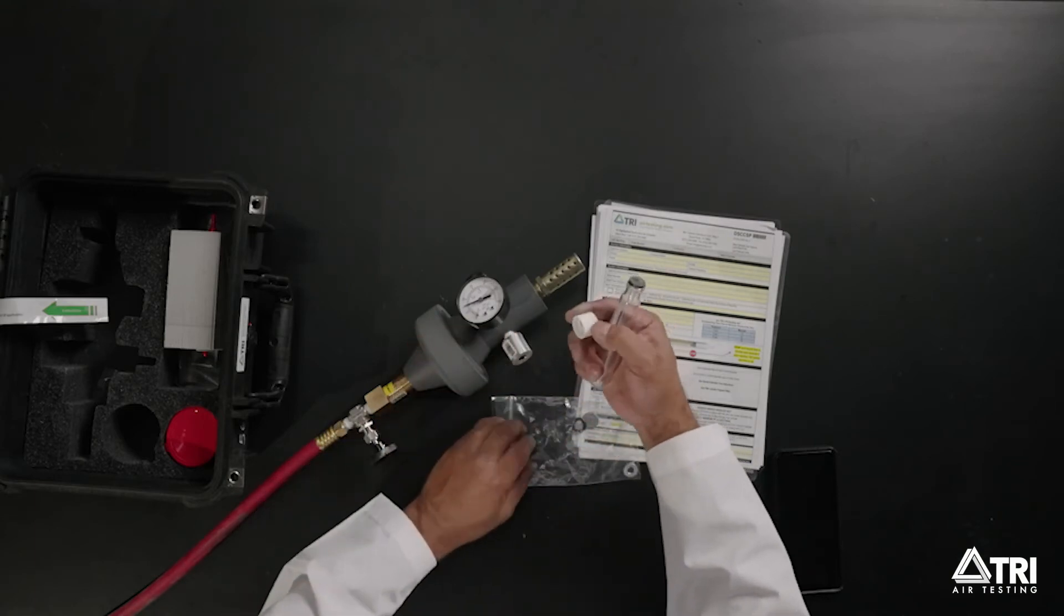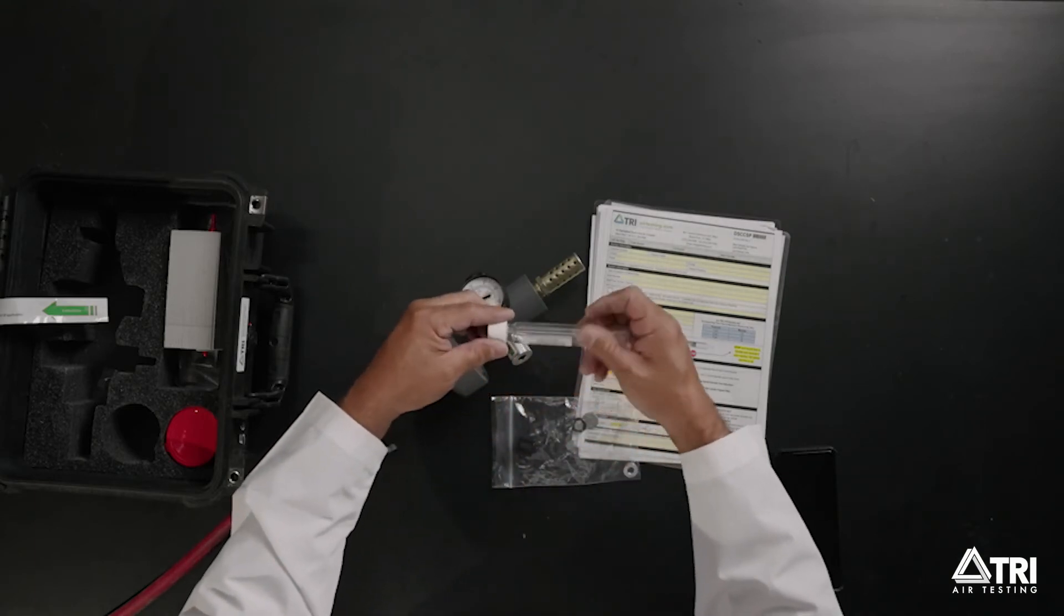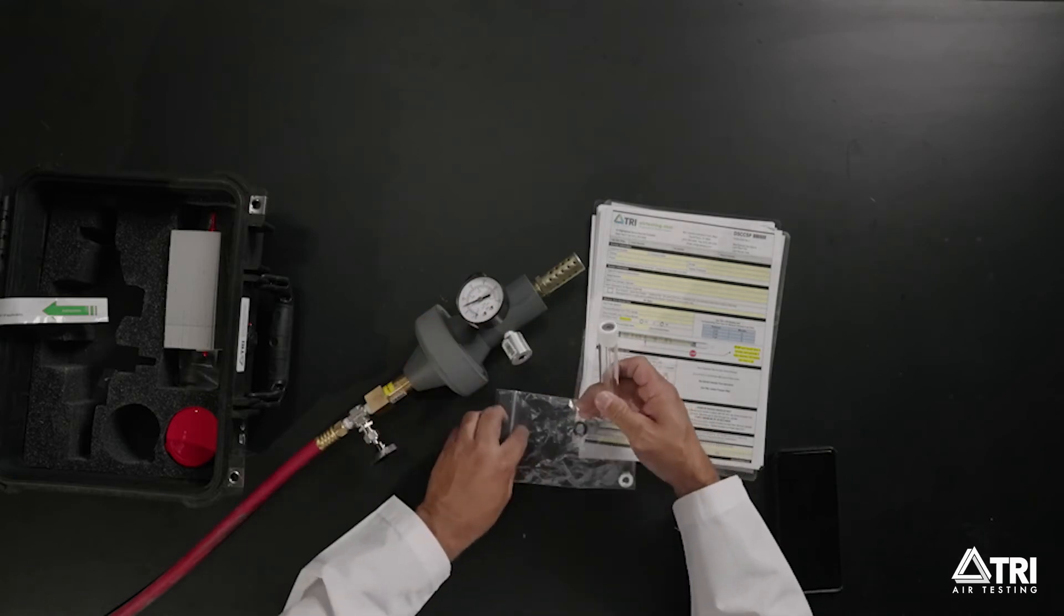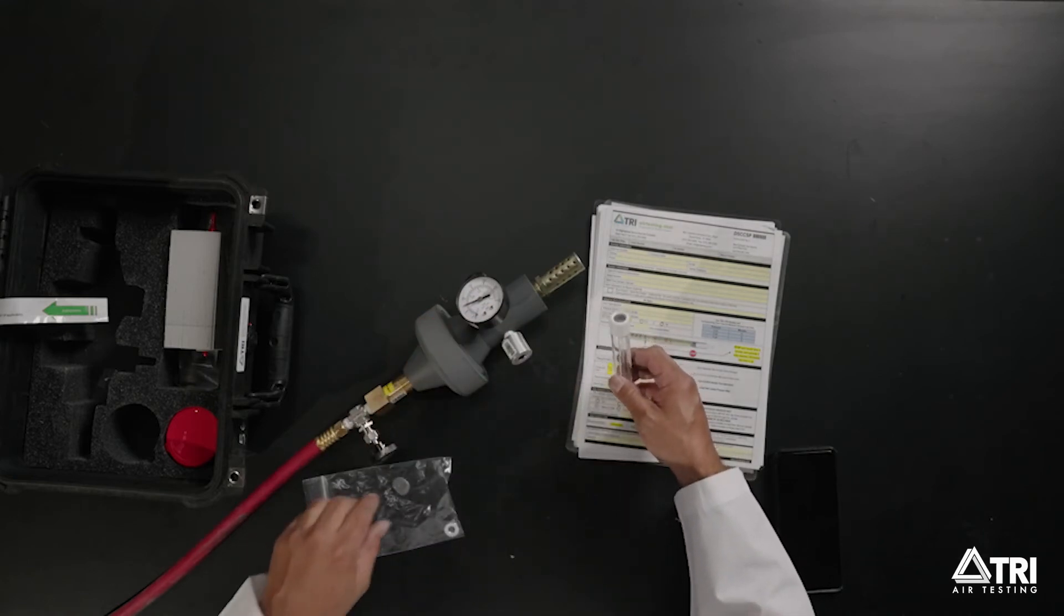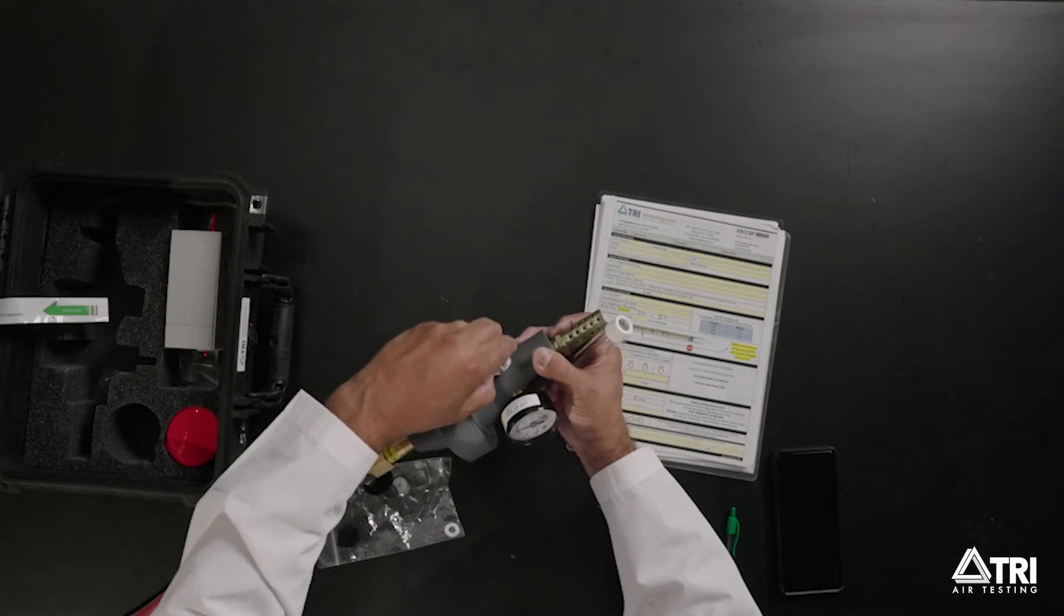Remove the black shipping cap and replace it with the white sampling cap. Insert the bottle into the fitting containing the needles just above the pressure gauge by pressing straight down onto the needles like so.